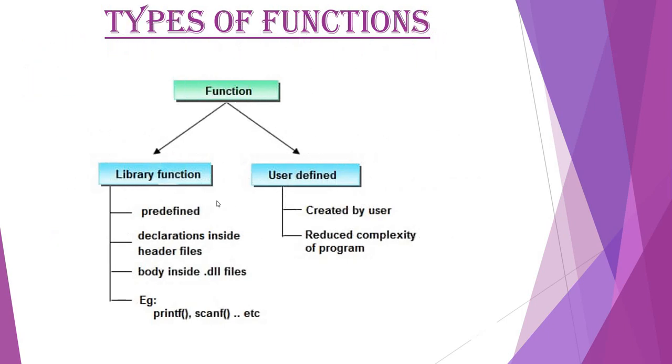Types of functions. Basically, there are two types of functions. The first one is library function, also called predefined function. Those functions which are already defined in C header files are called library functions. For example, printf function, scanf function, etc. User defined function: these functions are created by the user which is used to reduce the complexity of the program.